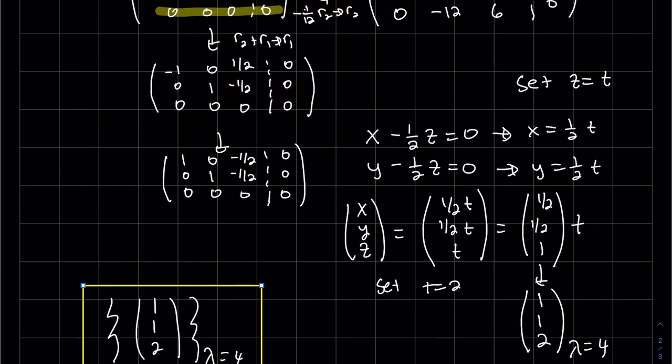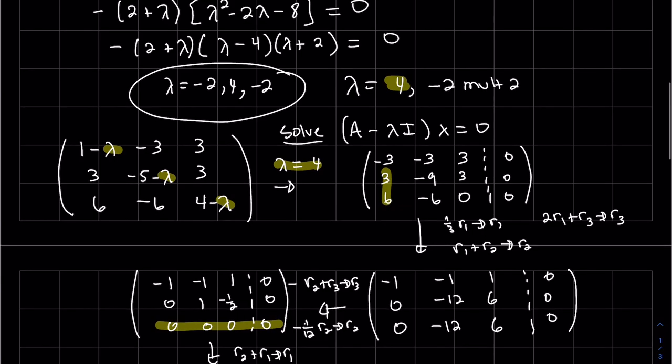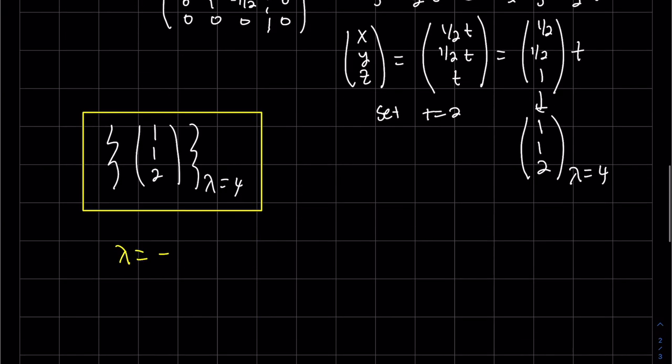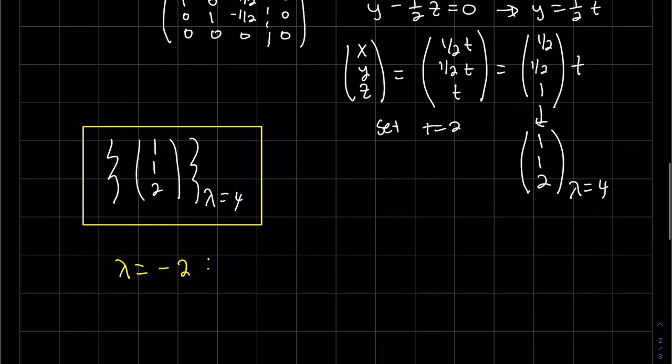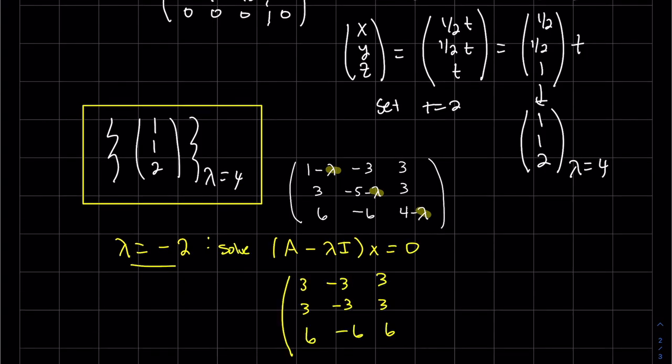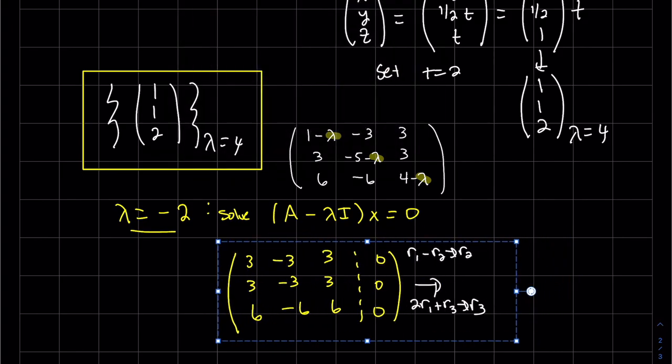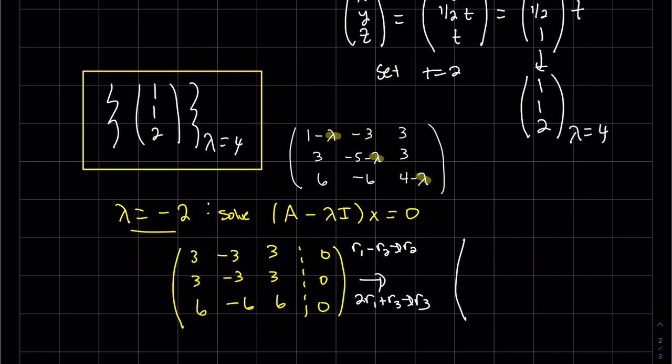Now let's do the same. Find the eigenvalues for the second eigenvalue minus two. Here's my A minus lambda I. Just so I can keep an eye on it. We're going to solve the same thing. So that looks like those last two rows are both going to zero out. And I will do one third R1 to R1 also.